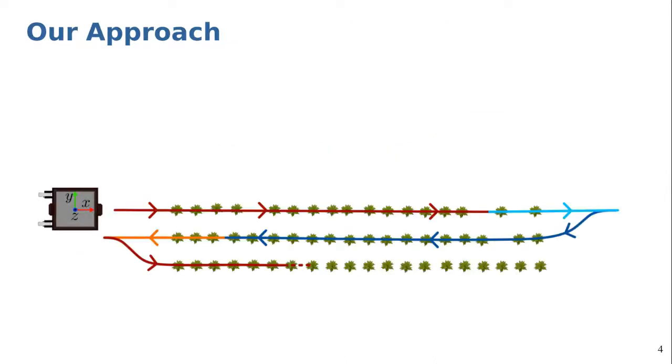In row crop fields, crops are arranged along multiple parallel curves. We take advantage of such arrangement to enable a mobile robot to autonomously navigate and monitor the crops in the field.